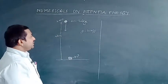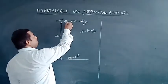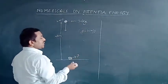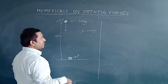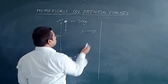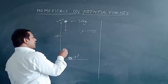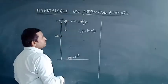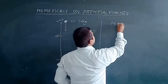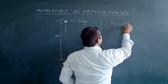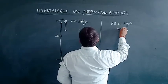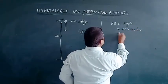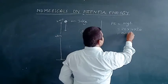In this question, the mass of the object is 20 kg, the gravitational acceleration is 10 m/s², and the height attained by the object from the ground surface is 20 meters. So the potential energy possessed by that object = mgh = 20 × 10 × 20 = 4000 joules.